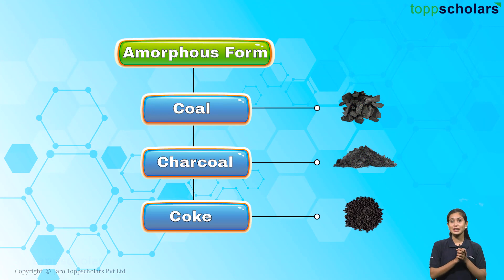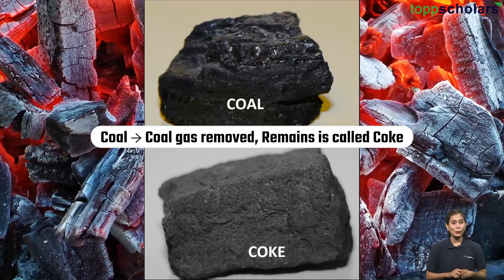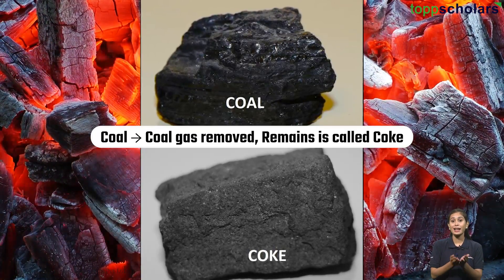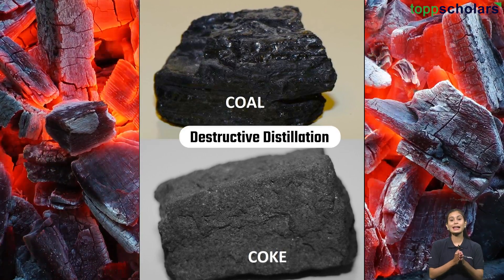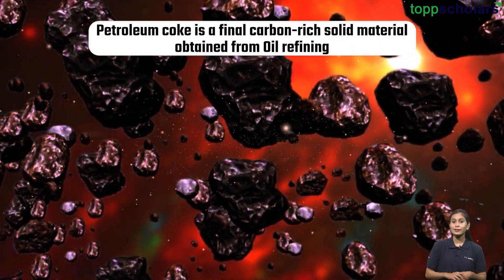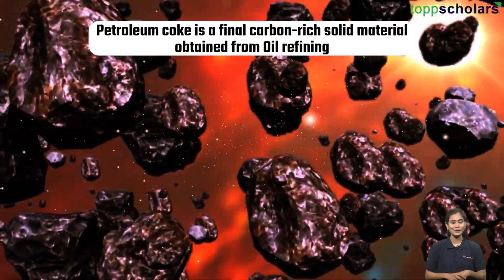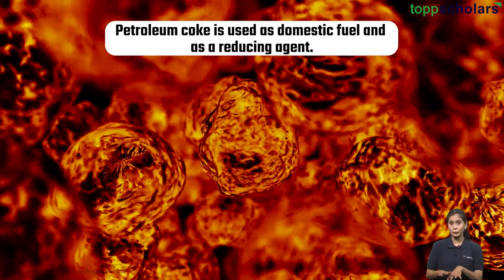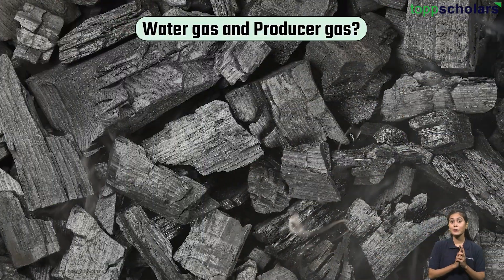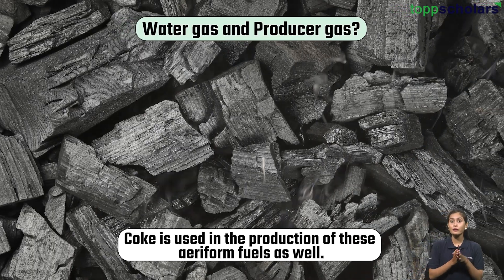Now let's discuss the last amorphous allotrope of carbon: coke. When coal gas is taken away from coal, the pure coal that remains is called coke. This is done by the destructive distillation of coal. Petroleum coke is a final carbon-rich solid material obtained from oil refining. It is used as domestic fuel and as a reducing agent. Coke is also used in the production of water gas and producer gas.